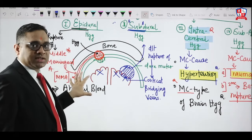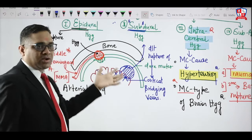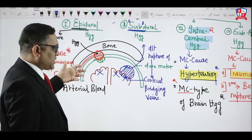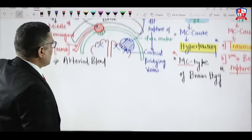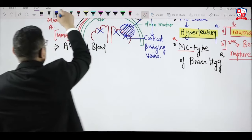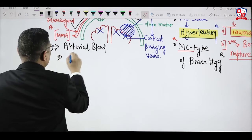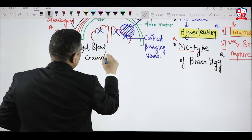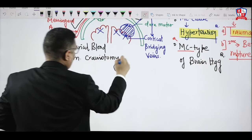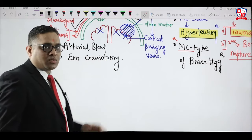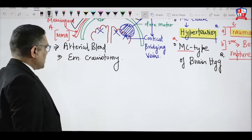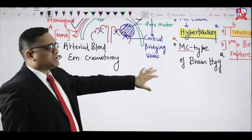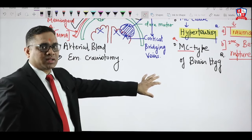Who is more dangerous? Epidural is more dangerous because arterial blood flow is faster, leading to more blood loss. Epidural hemorrhage will require emergency craniotomy to remove the pressure of the blood on the overlying brain and dura. Cortical bridging vein rupture is not as immediately harmful in comparison.